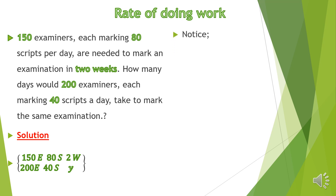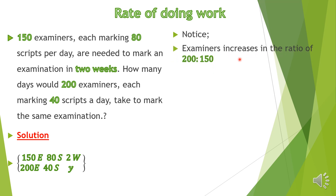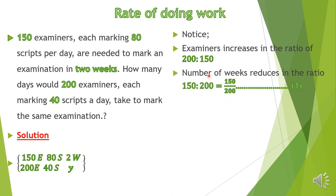Notice that the number of examiners is increasing from 150 to 200. If the number of examiners increases, you expect the number of weeks taken to reduce. Therefore, examiners increase in the ratio 200 to 150, and the number of weeks will reduce in the ratio 150 to 200, which is 150 over 200. Let's call this equation one.